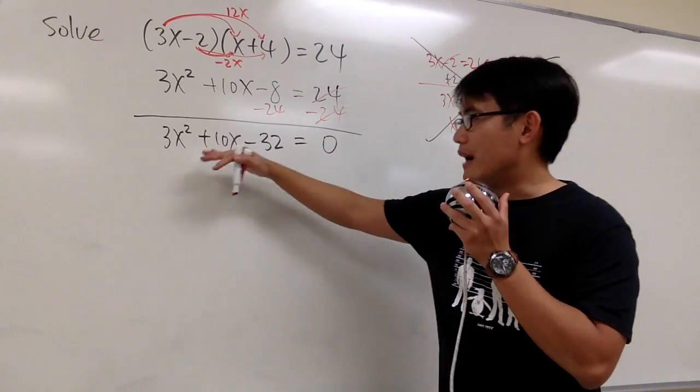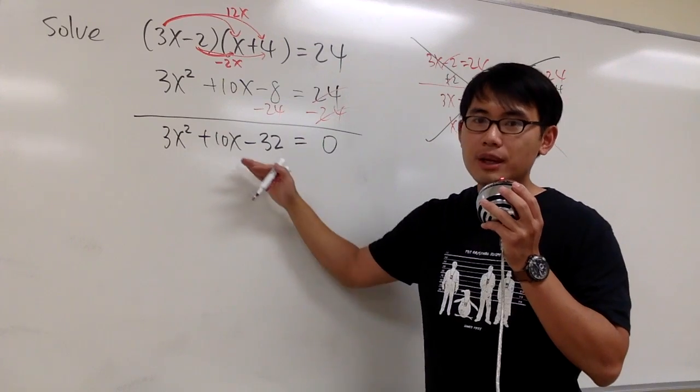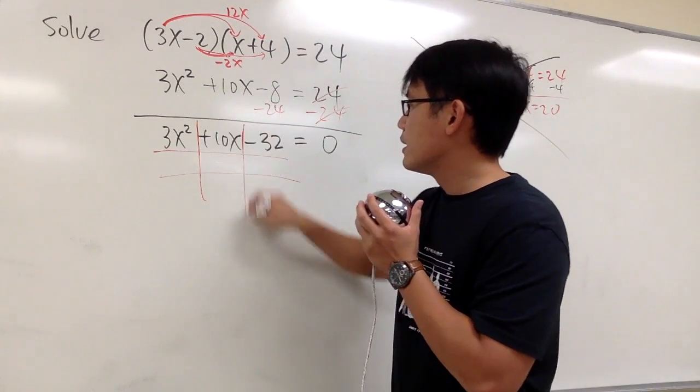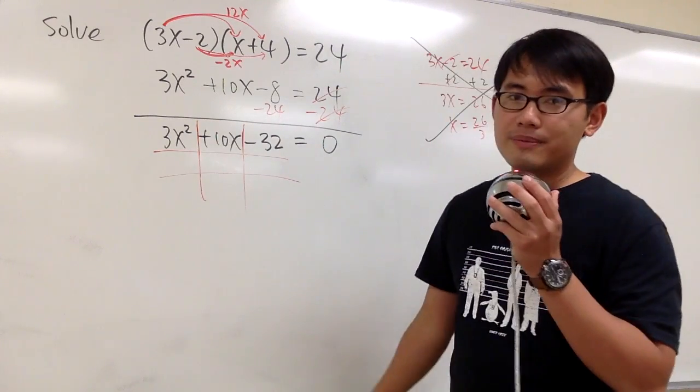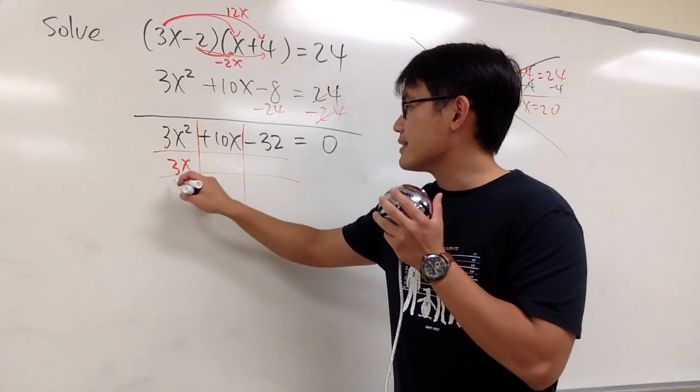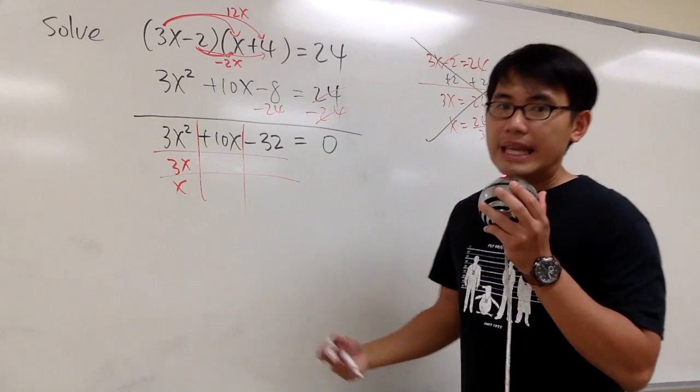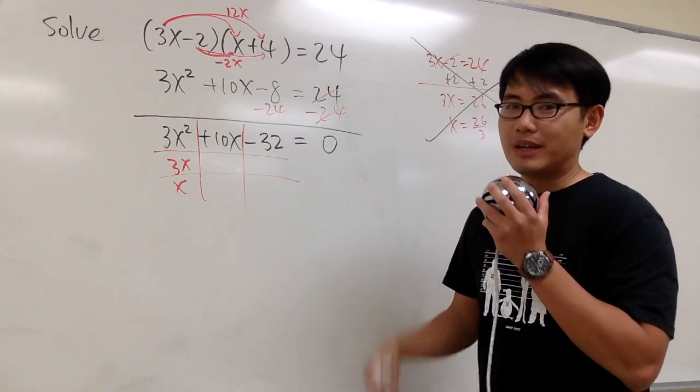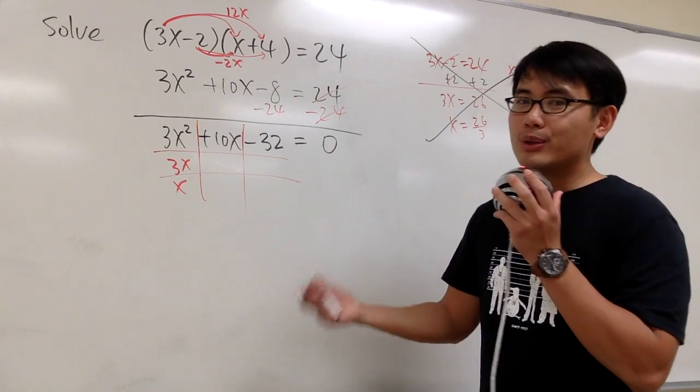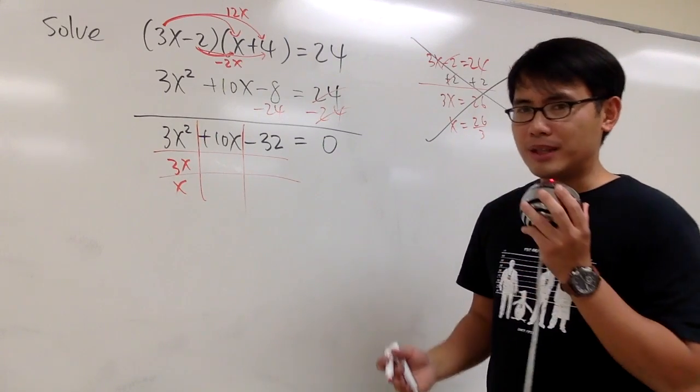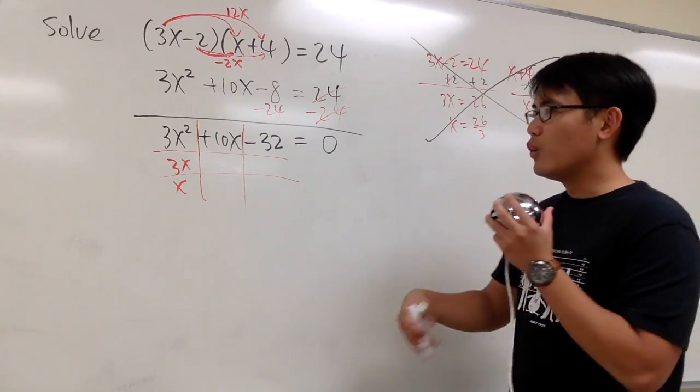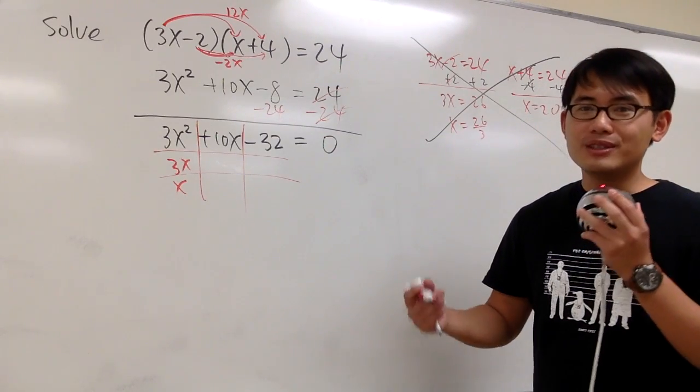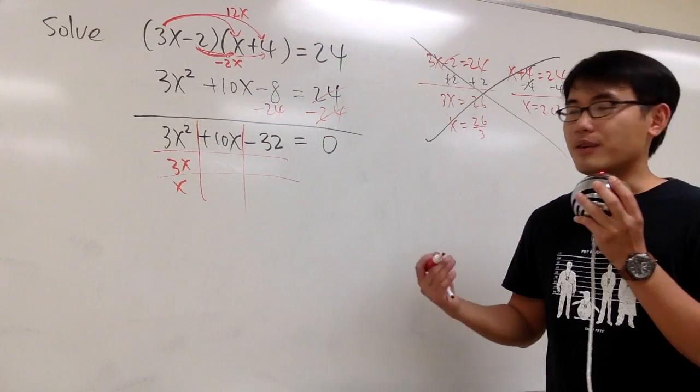And now we are going to factor this out. This is a 3-term polynomial, so we will do this by the tic-tac-toe method. What times what will give us 3x squared? 3x and x. And now, what times what will give us negative 32? We have a couple possibilities. 2 and 16, and one of them has to be negative. And 4 and 8, one of them has to be negative. Let me just tell you guys the correct answer for this.